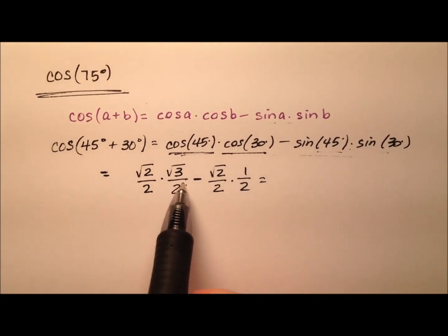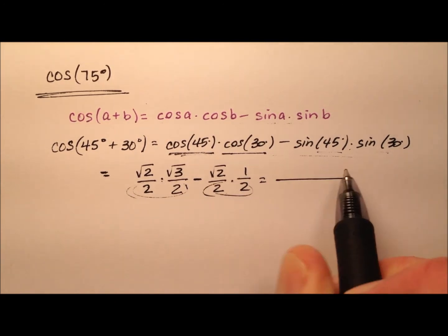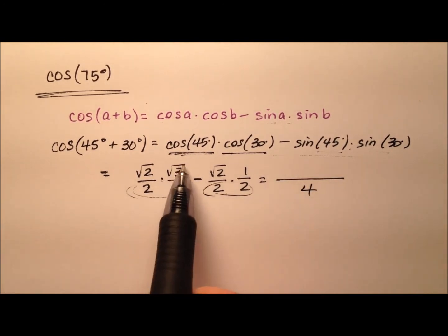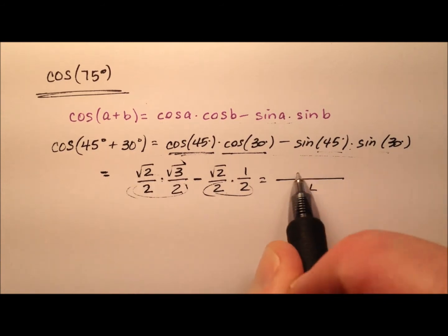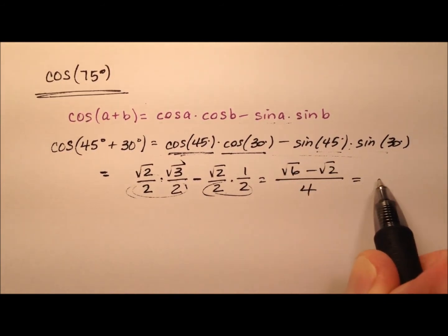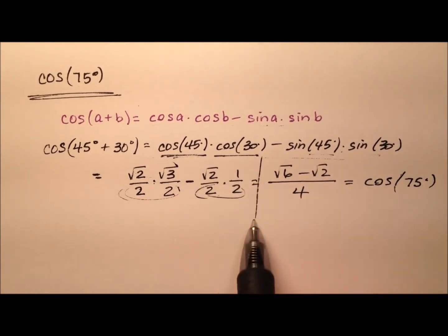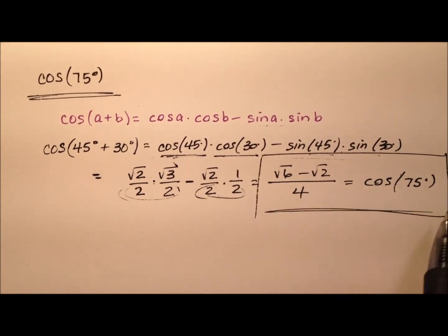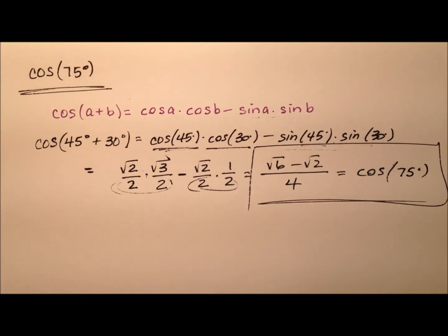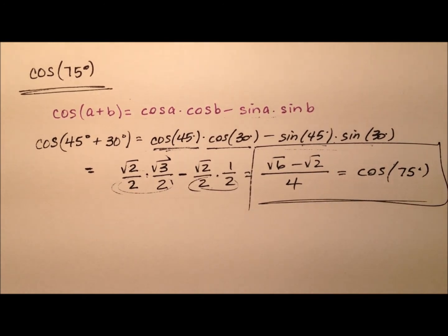Our denominators are both 2 times 2, so we know it's going to be over 4. And our numerators give us the square root of 6 minus the square root of 2. So in this first example, we see that the exact value for the cosine of 75 degrees is the square root of 6 minus the square root of 2, all over 4.